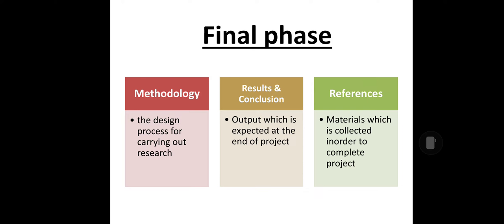With respect to your branch — whether it may be civil engineering, mechanical, automobile, or CSE — you need to start your methodology and design procedure. At last, you will conclude with the results and discussions, where you will reflect tabular columns like graphs or pictorial representations, with a comparative study of previous projects from the literature review versus your project, showing what new ideology and output you have achieved.